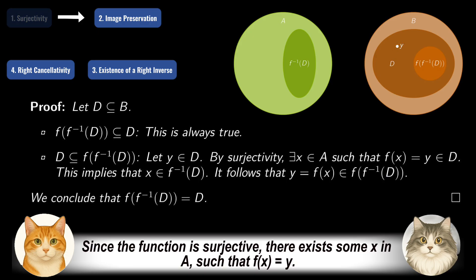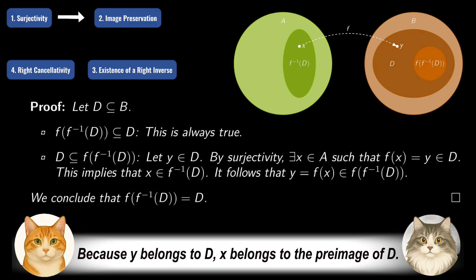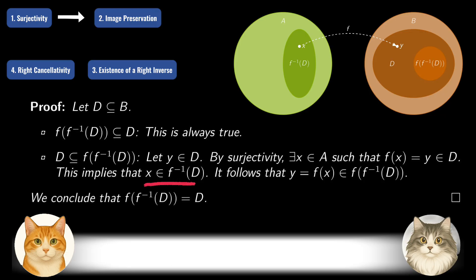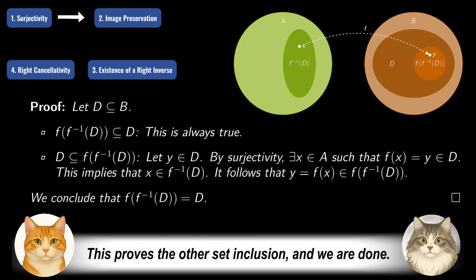Let y be an element of D. Since the function is surjective, there exists some x in A such that f(x) equals y. Because y belongs to D, x belongs to the preimage of D. Therefore, f(x), which is precisely y, belongs to the image of the preimage of D. This proves the other set inclusion, and we are done.